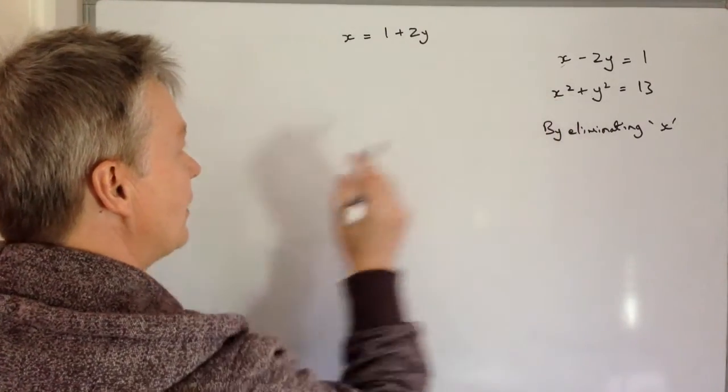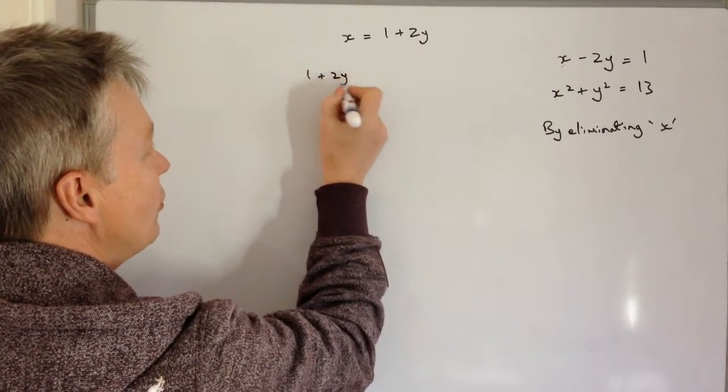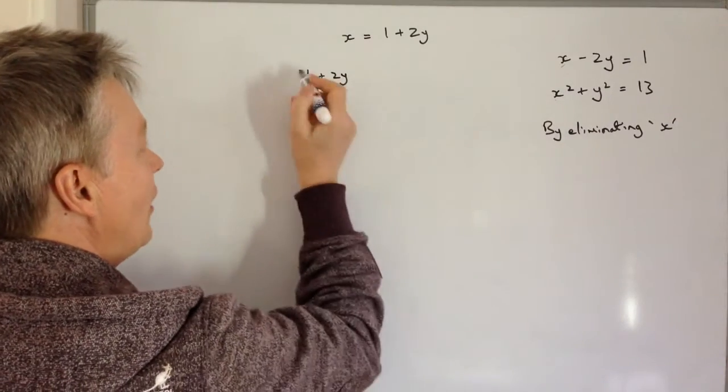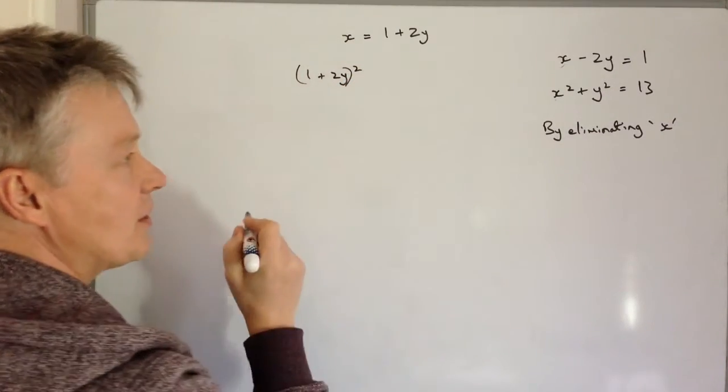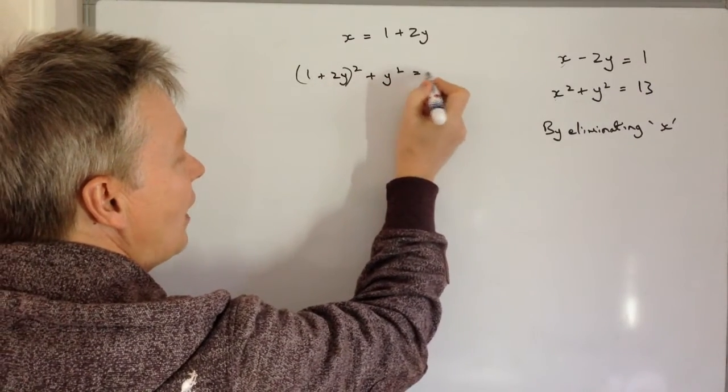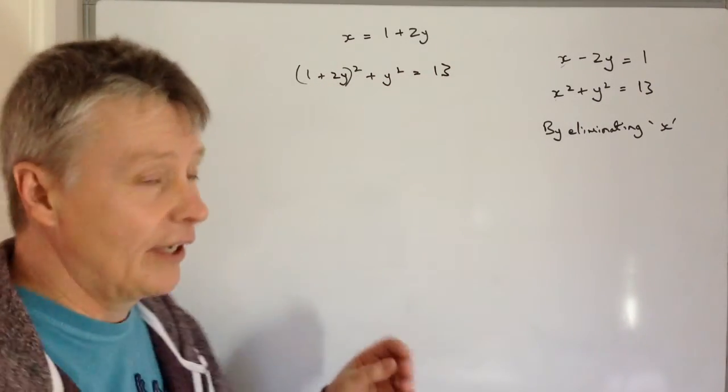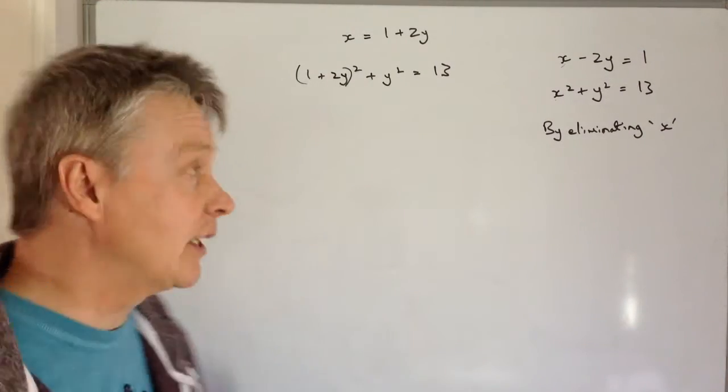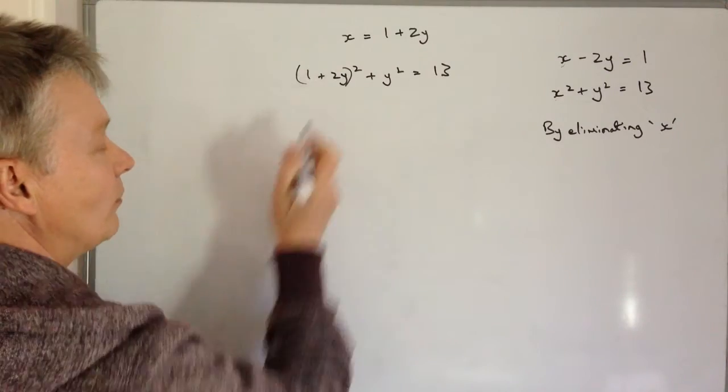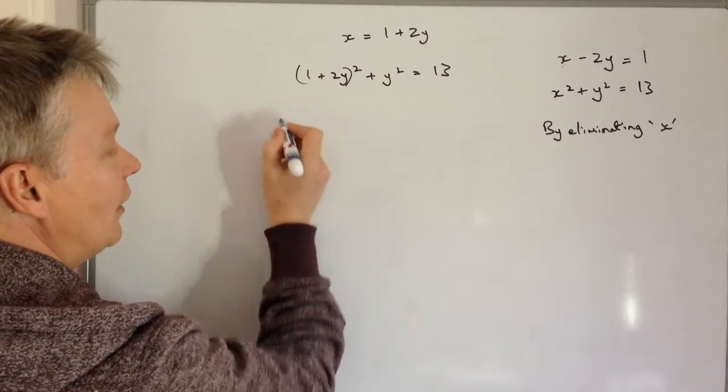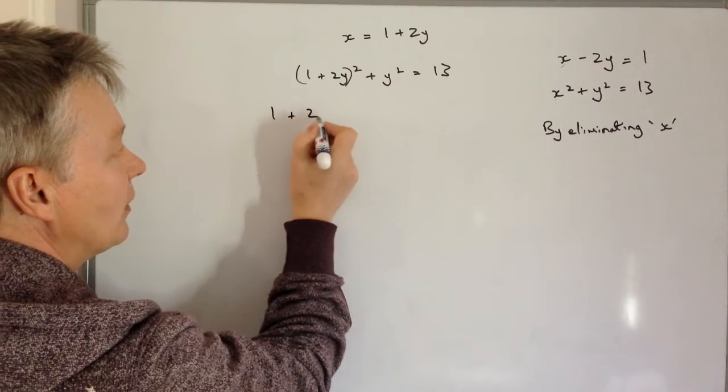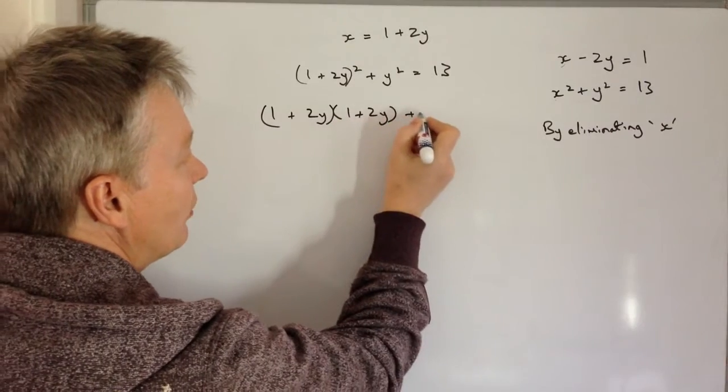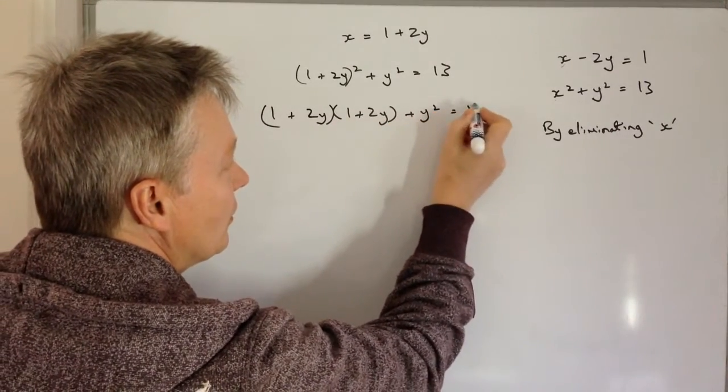So I could write the second equation as 1 plus 2Y. Now just be very careful that it is squared. So it's good to put it in brackets and square it, and that's going to be plus Y squared, and that equals 13. Then really it's a case of multiplying this out and solving for the value of Y. So if I write that out longhand, I'm going to end up with 1 plus 2Y multiplied by 1 plus 2Y, plus Y squared equals 13.